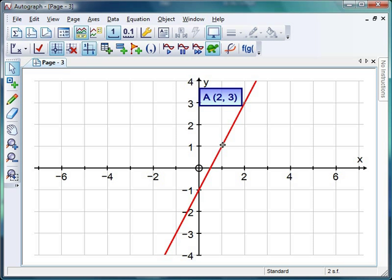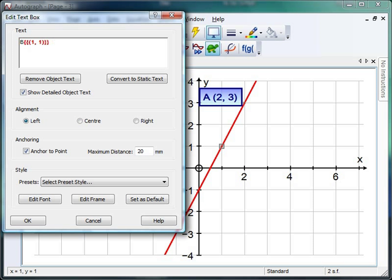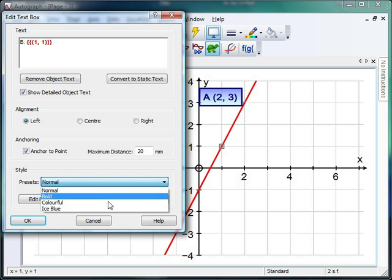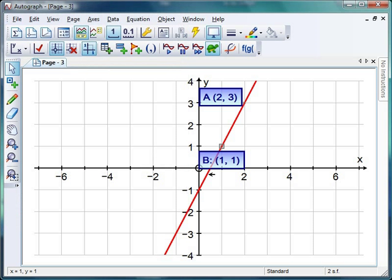I'll do a similar thing down here, click on that, text box, let's go for something original like B, ice blue, looking nice, OK. Now we can get the students to try and work out what the gradient is between those two points, and then we can use Autograph to help us along the way.